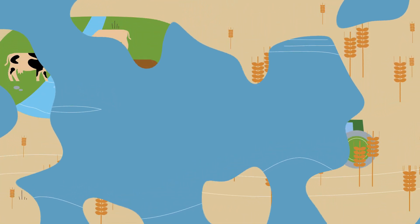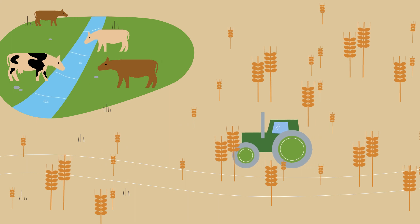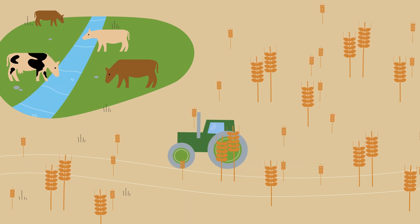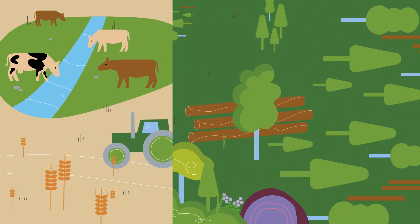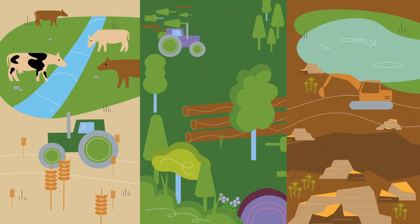Before we knew what peatlands could do, we have drained them with great effort for centuries. Half of the drained peatlands worldwide are used for agriculture. But we also rely on peat soils in forestry and for peat extraction.